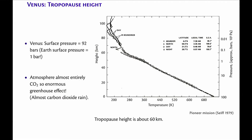Why does the temperature keep going down above the tropopause? Because it's not in radiative equilibrium. If it were in radiative equilibrium, it would be uniform. You actually have clouds up here which are emitting infrared, so it's certainly not in radiative equilibrium. The tropopause isn't really sharp — it's kind of a merger up here, with a lot of clouds.